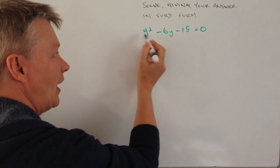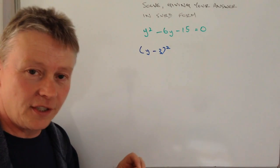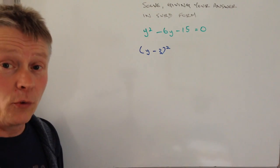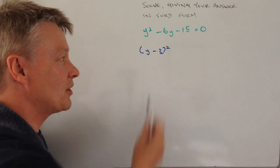Well the way to do that is to write y minus 3 squared. So what we actually do first is we look at the term here minus 6, we halve it, half of minus 6 is minus 3, and then we square it.